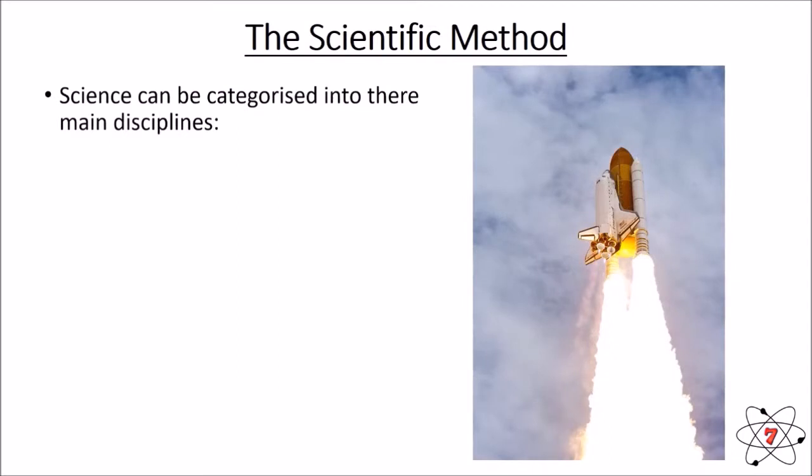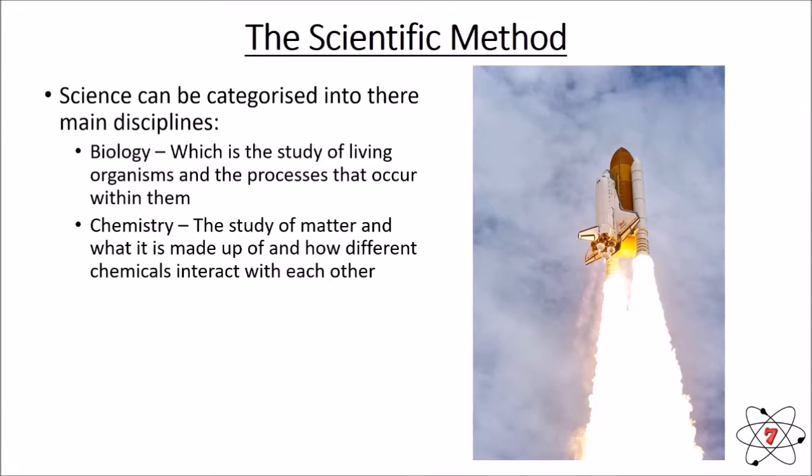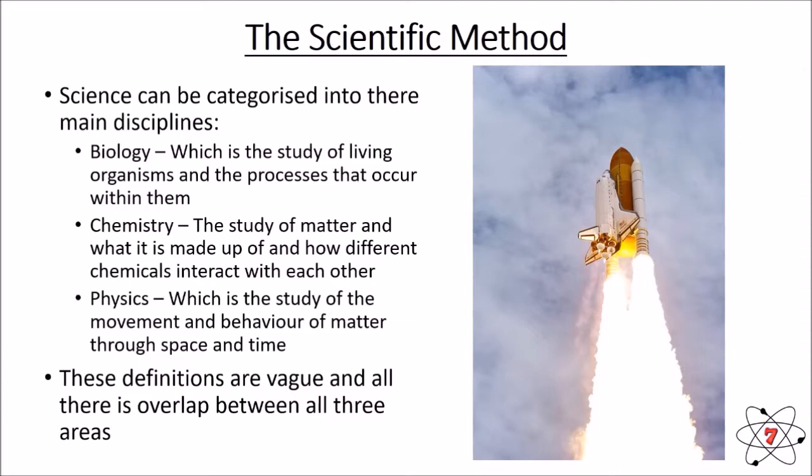Now we can generally categorize science into three main areas. We've got biology, the study of living things and all the processes that occur within them. We've got chemistry, the study of matter, how it's made up, how different chemicals interact with each other. And finally, we've got physics, which is study of movement and behavior of matter through space and time. Now these definitions are a bit simplified, and there is certainly lots of overlap between these three disciplines. It's also fair to say there really are many more than three disciplines. Biology could be broken down into maybe 50 different things. The same with chemistry, the same with physics. There are also some other overarching disciplines like earth science, which draw from biology, chemistry, and physics. But when we study science, at least at the earlier stages, we break it down into biology, chemistry, and physics. So there is a lot of overlap, but these are the areas we want to be thinking about.